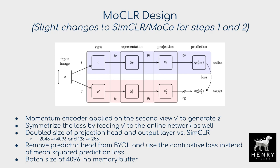For stages one and two, the authors propose the MoClear design, an extension to SimCLR/MoCo shown in the Bootstrap Your Own Latent (BYOL) framework. In BYOL, input images pass through two different data augmentation transformations; the online network predicts the target network's representation. The target network is a running average of the online network's parameters—a momentum encoder with a coefficient like 0.99, common to both MoCo and BYOL. This momentum encoder is applied on the second view to generate the predicted Z-prime.